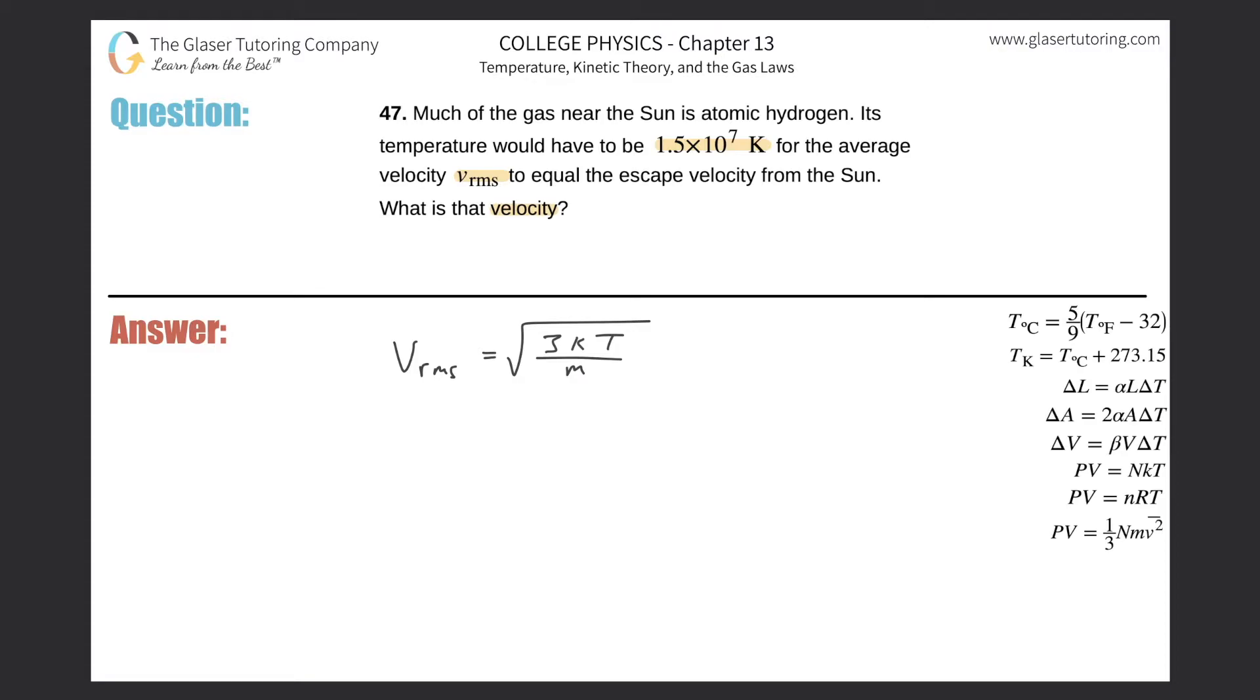They're asking us to solve for velocity. This equation is already solved for velocity, so that's great. All I need to now know is the temperature we're talking about and then the mass of that particular atom or molecule. Now, we know the temperature—they gave it to us in Kelvin—and the Boltzmann constant is just a memorized value.